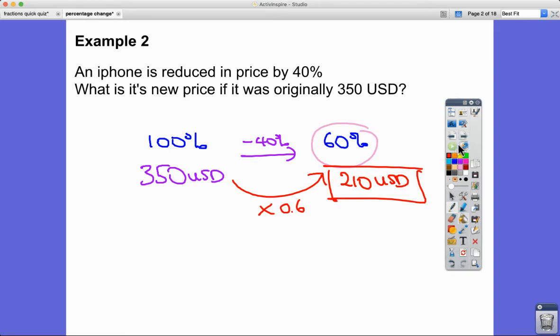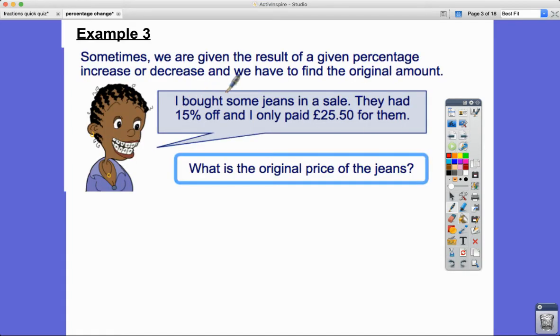Now this is really handy when we have to go backwards. So we might be given, say, a sale price and we have to find the original price. Let's look at a couple of examples like this.